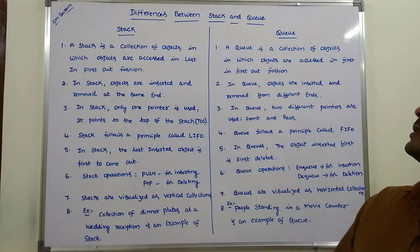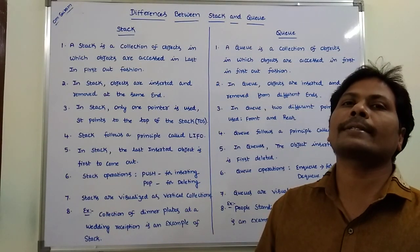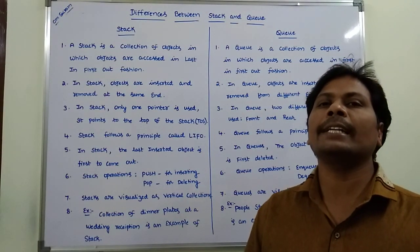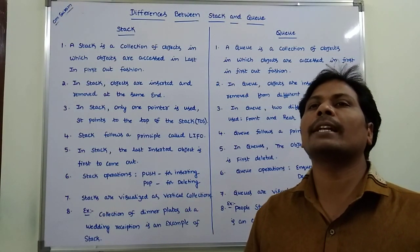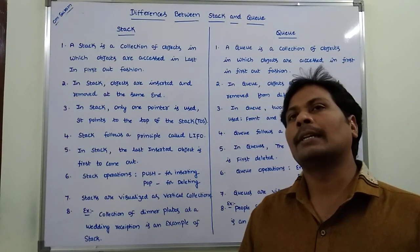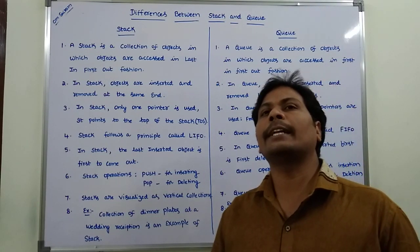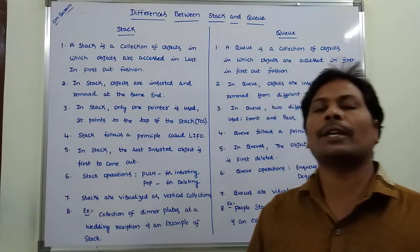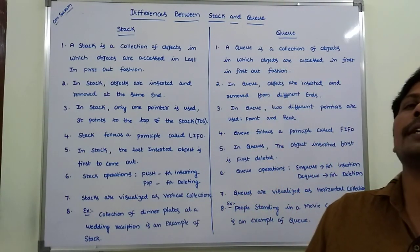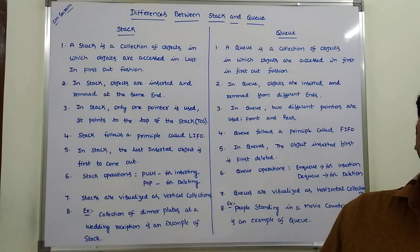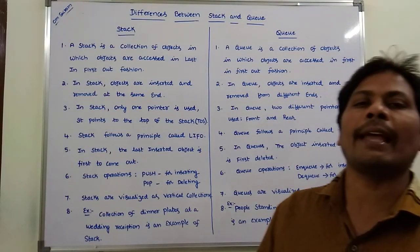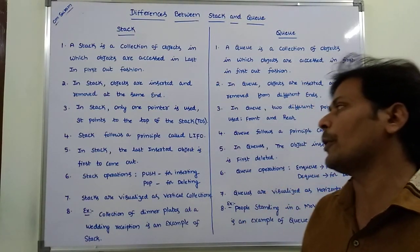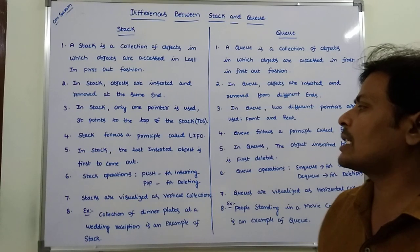In queue, there are two pointers used: one is front and the second one is rear. Front is used for deleting an element from the queue. Rear is used for inserting an element into the queue.